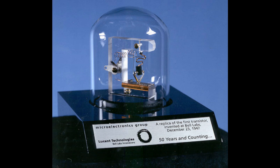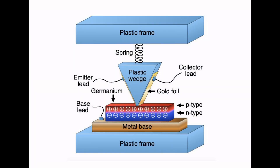Now it's a bit difficult to see what's actually going on here, so let's have a look at this schematic. This shows more clearly how that was made up. Essentially what they did was wrap a bit of gold around a plastic wedge and press it against the germanium block. They put a thin slice separating the two sides of the point of the plastic, so you had two leaves of gold very close together pressed against the germanium. And that's how they made this transistor work.